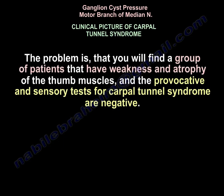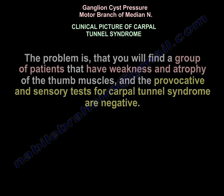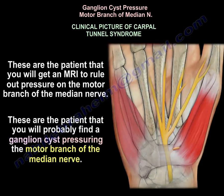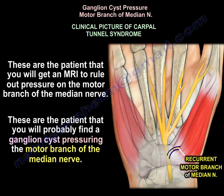The problem is when you find a group of patients that have weakness and atrophy of the thumb muscles, but their provocative and sensory tests for carpal tunnel syndrome are negative. This is the patient for whom you're going to get an MRI to rule out pressure on the motor branch of the median nerve — and these are the patients where you will likely find a ganglion cyst pressuring the motor branch.